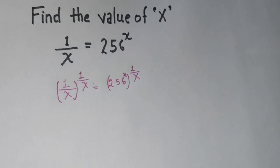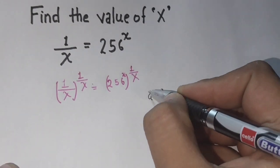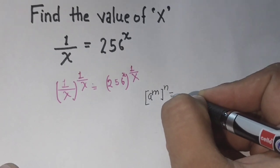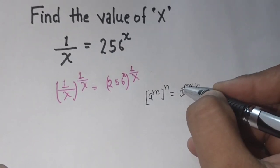One famous identity to use here: a power m, power n, equals a power m times n.